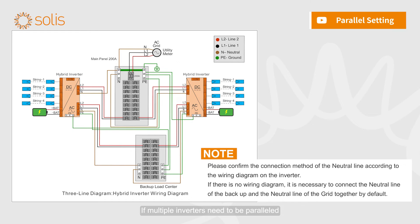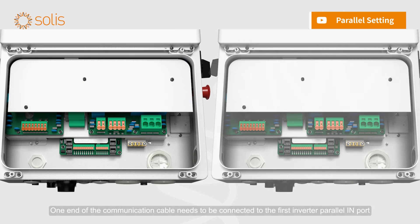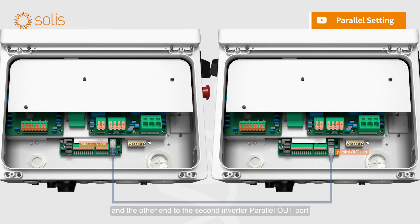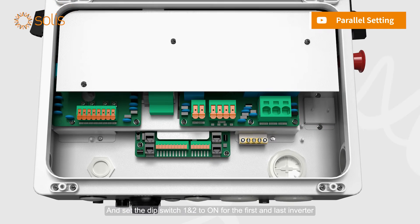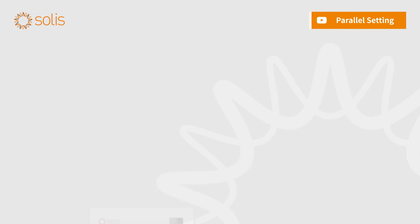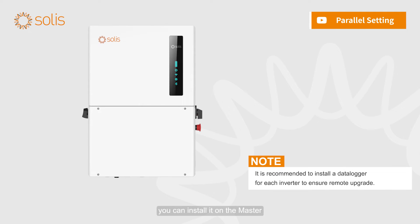If multiple inverters need to be paralleled, one end of the communication cable needs to be connected to the first inverter parallel in port and the other end to the second inverter parallel out port. Set dip switch one and two to on for the first and last inverter. If you need to connect the data logger, you can install it on the master.